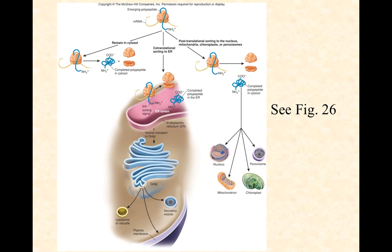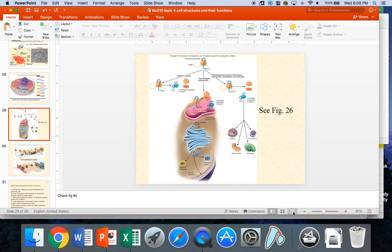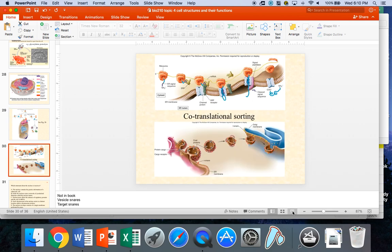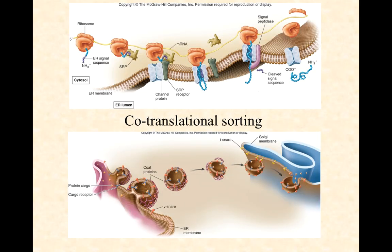Or we can have post-translational sorting, where the full protein gets made in the cytoplasm and only then is its signal sequence recognized by some form of a signal recognition particle that delivers it to its endpoint. So an important part of how these organelles work really comes down to whether or not they have signal recognition particles associated with these proteins so that the organelles can receive the proteins that they need.